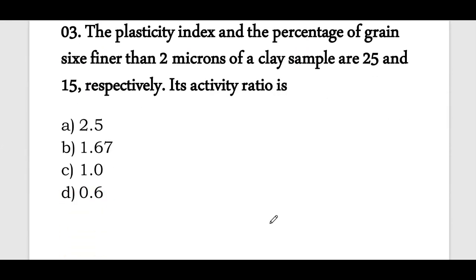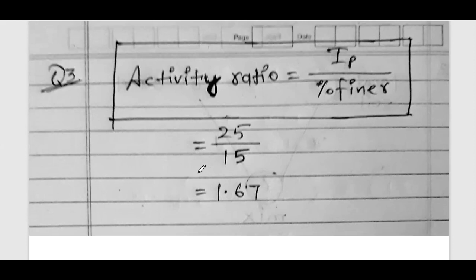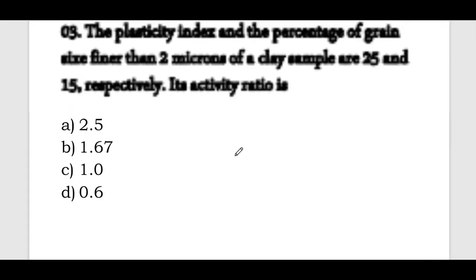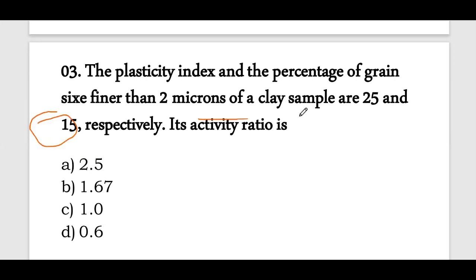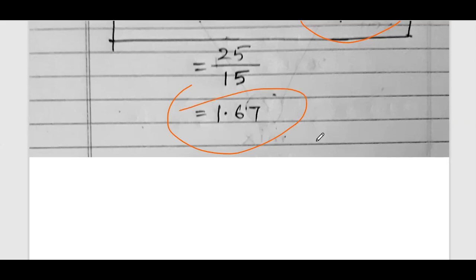Question number 3: The plasticity index and percentage of grains finer than 2 microns of a clay sample are 25 and 15 respectively. Activity ratio is plasticity index divided by percentage finer, which is 25 divided by 15. We can calculate this as 1.67.